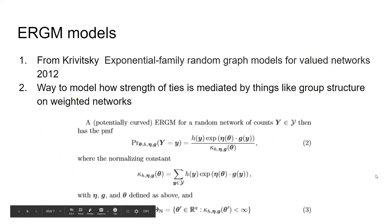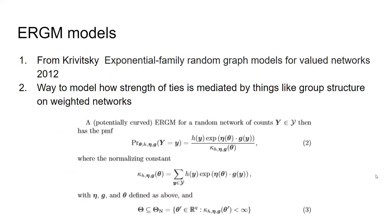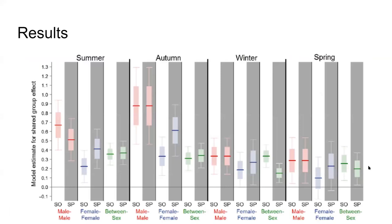The ERGM models come from a 2012 paper on CRISPY exponential family random graph models. They show how the strength of ties is mediated by group structure on weighted networks. The results for the study show the best-fit model effects for the different social networks — male-male, female-female, and between-sex — given each season.